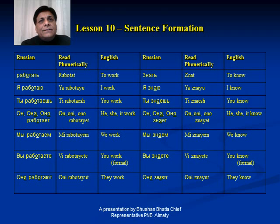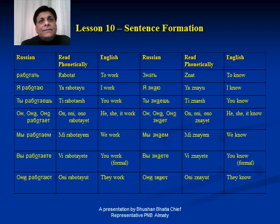Now we will have another example — the verb 'Znat', which means 'to know'. So 'Ya Znayu' means 'I know'. Similarly, as it was 'Ya Rabotayu' for 'I work', here it is 'Ya Znayu' for 'I know'. 'Ti Znaesh' — you know. In the case of 'work' it was 'Ti Rabotaesh'; here it is 'Ti Znaesh'.